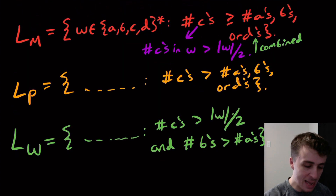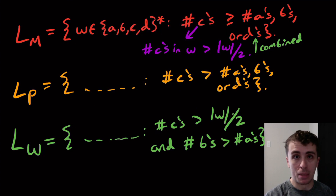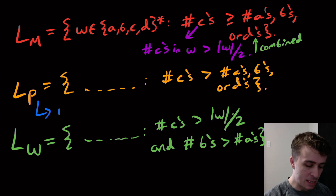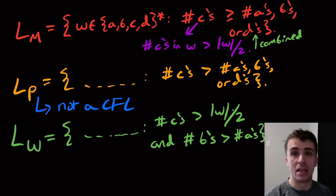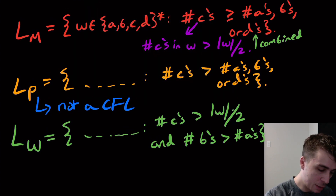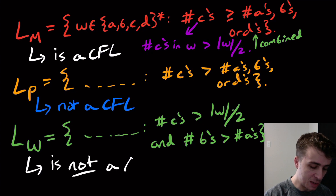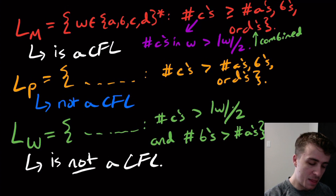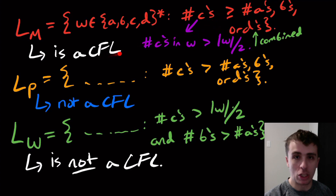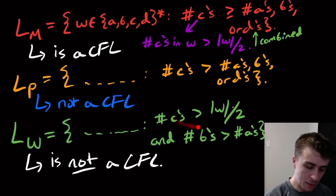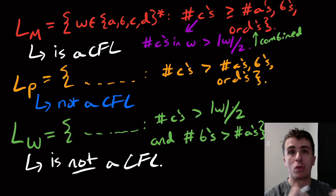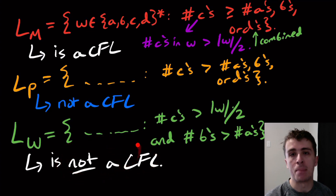So what we want to ask is: is there a context-free grammar for any of these? It turns out that from the previous video using the pumping lemma, L_P is not a CFL. But what we're going to do is show that L_M is a CFL, and that the bottom one, L_W, is not a CFL. There's something interesting here about the relationship between majority being context-free and enforcing majority plus another relationship between two other characters causing it to not be context-free.